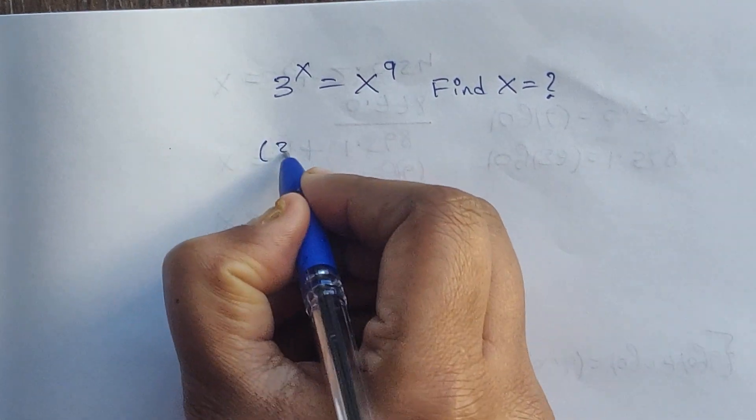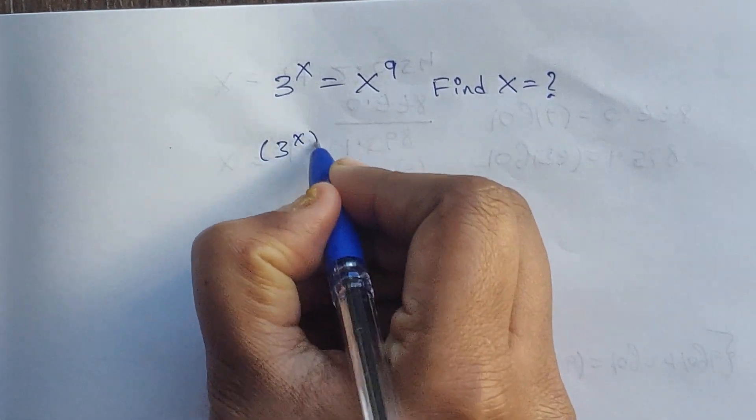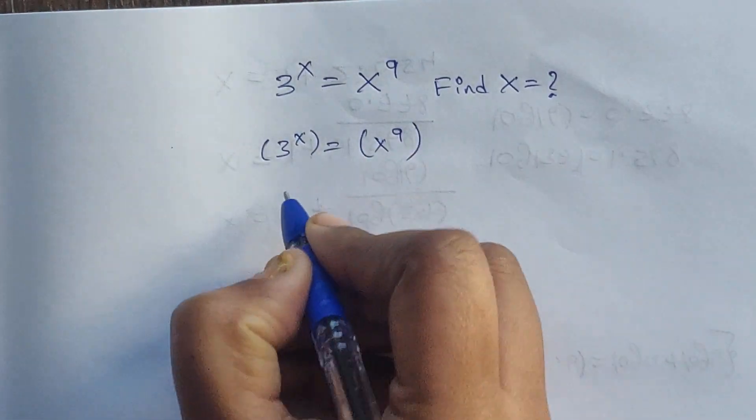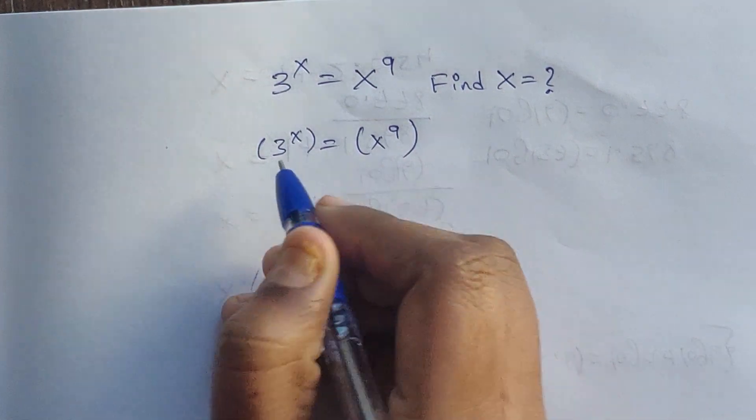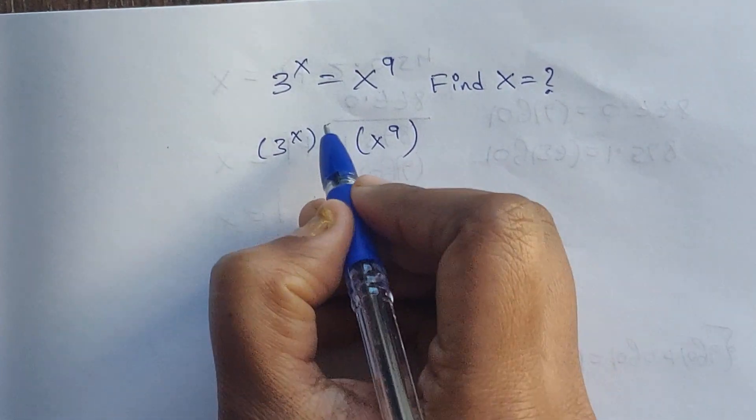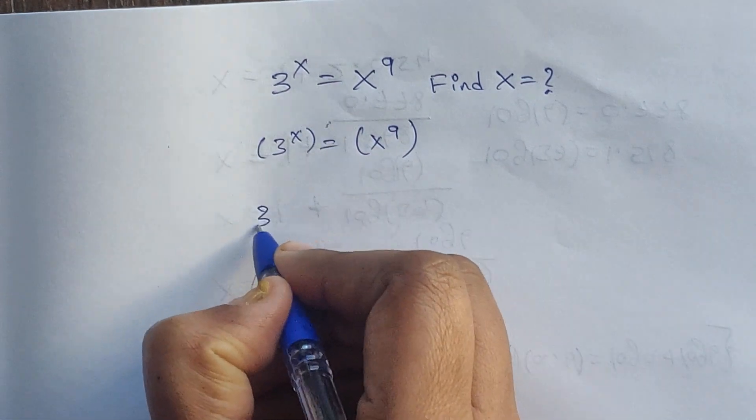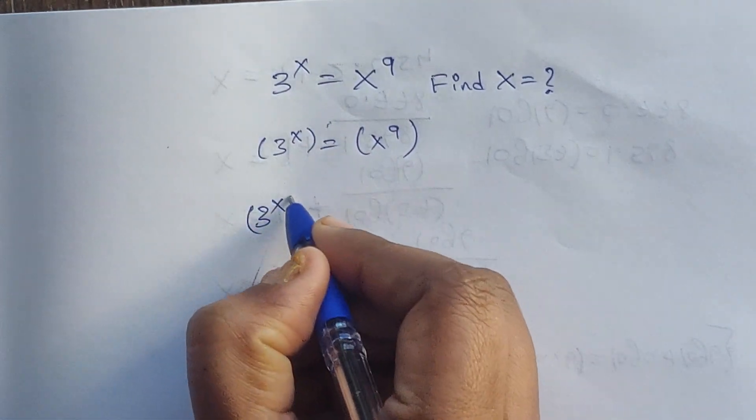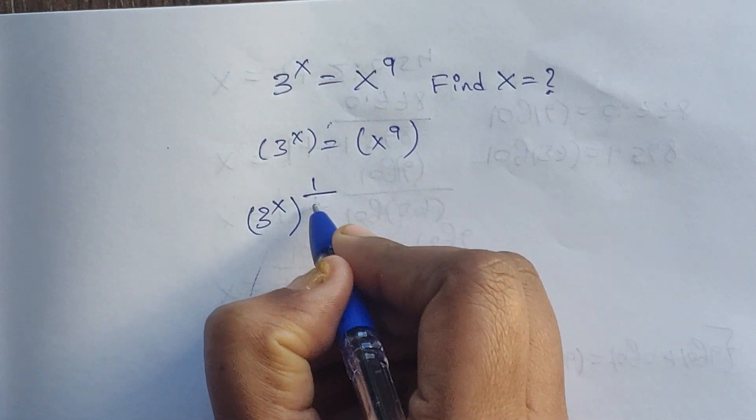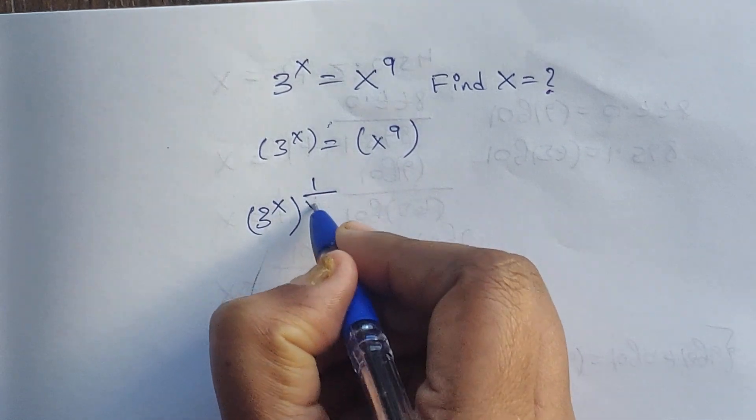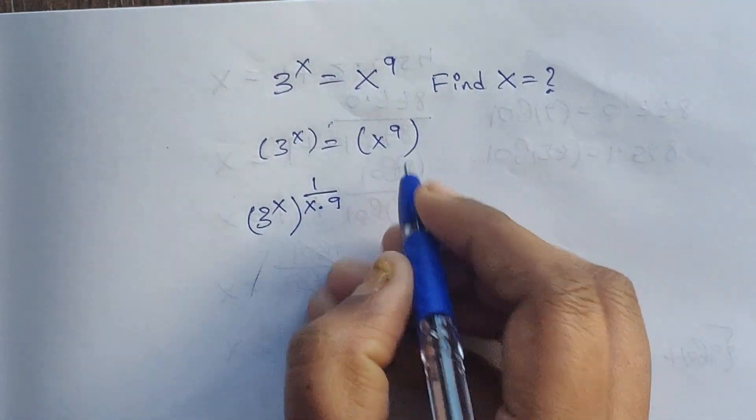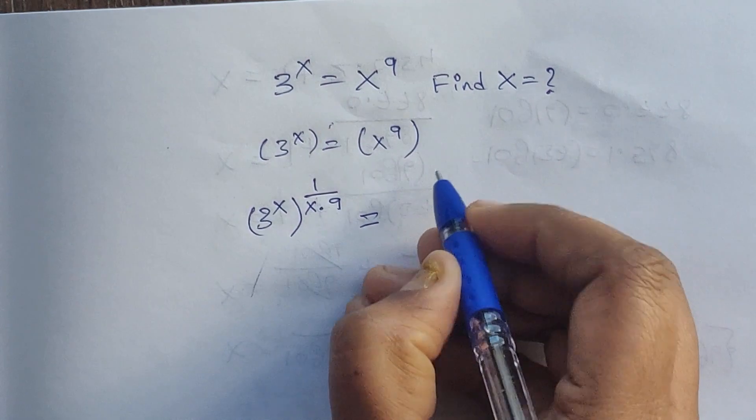I am writing this inside the bracket: x to the power of 9. Now I am multiplying both sides by 1 over 3 to the power of x, whole to the power of 1 divided by x times 9.